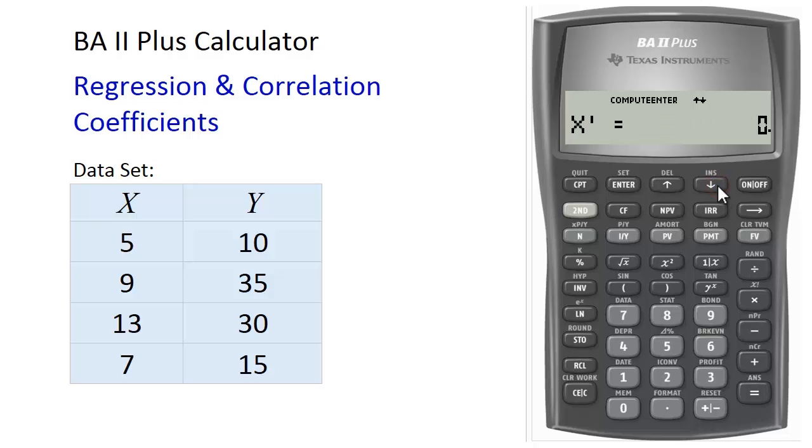If you scroll down further, it shows you X prime, and this is used to compute Y value given an X value. So for example, when X is 10, what do we expect Y to be using the equation we obtained? So normally you just plug in 10 for X, but you can also input 10 here, enter, and then scroll down and compute. If X is 10, Y will be 26.57.